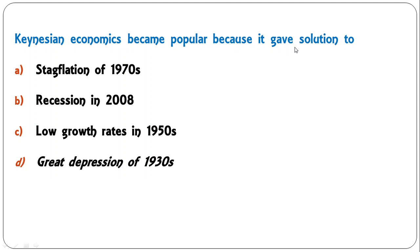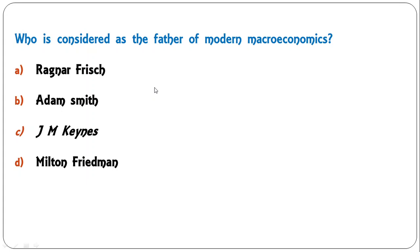Next question: Keynesian economics became popular because it gave solution to stagflation of 1970s, recession of 2008, long low growth rates in 1950s, or great depression of 1930s? The correct answer is D — on the backdrop of the great depression of 1930s, Keynesian economics became popular and Keynes gave the general theory of employment.